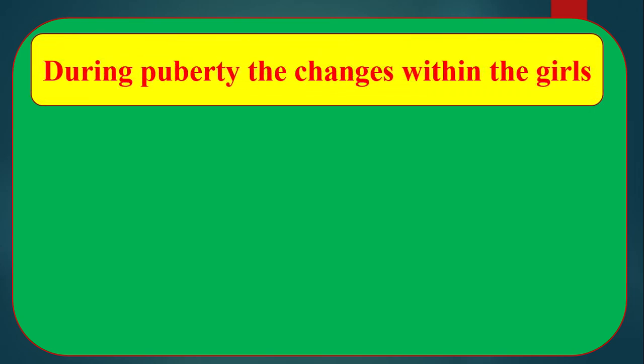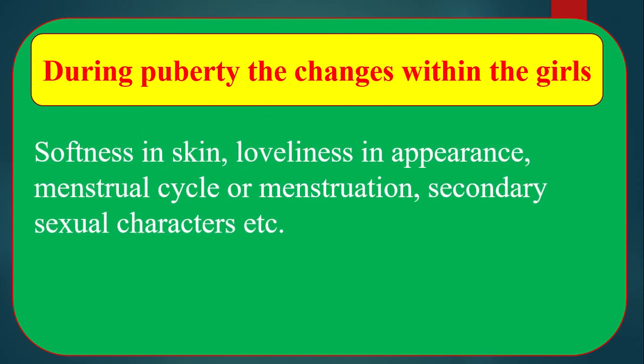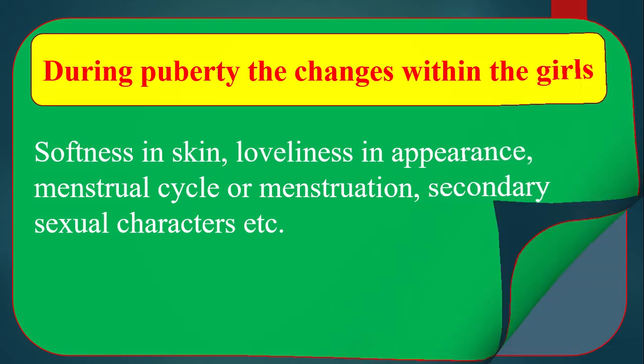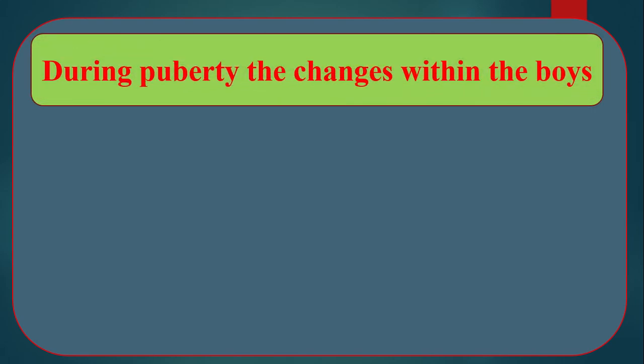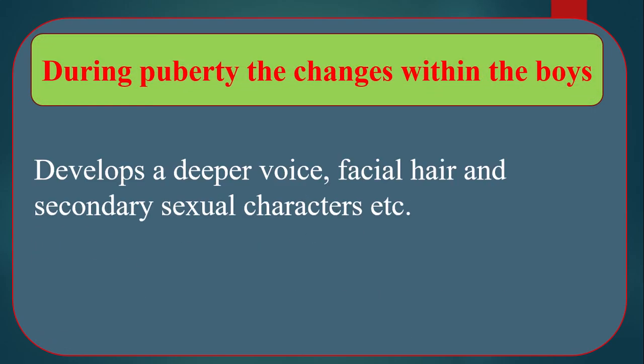During puberty, the changes within girls include softness in skin, loveliness in appearance, menstrual cycle or menstruation, and development of secondary sexual characteristics. On the other hand, during puberty, changes within boys include developing a deeper voice, facial hair, and secondary sexual characters.